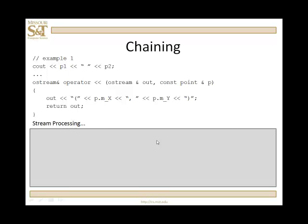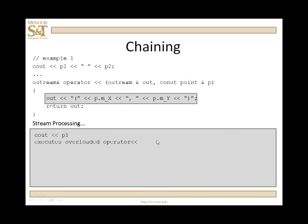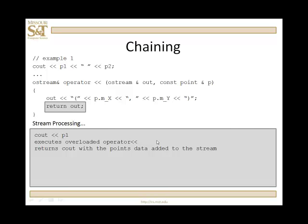Let's step through this, see how chaining works. We output p1. So, it executes the overloaded operator less than less than, and we return cout, that was this object that was passed in. Remember, this is a function. So, cout is the argument that fills the left-hand parameter. p1 is the argument that fills the right-hand parameter of this function. It returns cout with the points data added to the stream. That means that all of this returns cout. Which means I cout the space. That's the next thing. That returns cout with the space added to the stream.